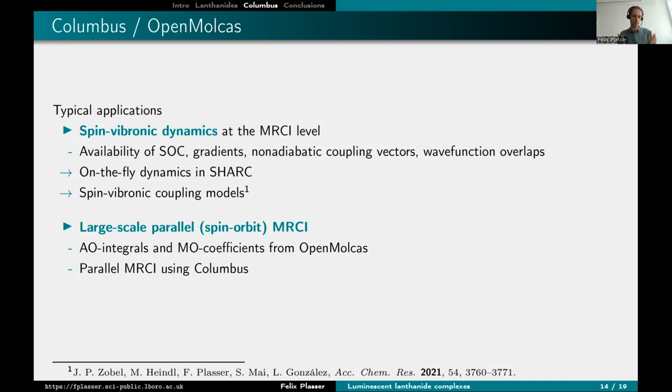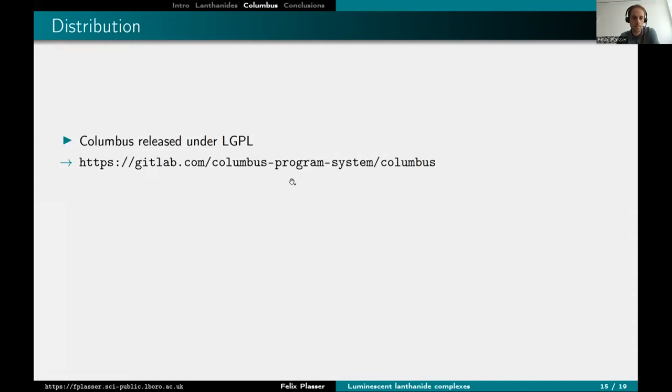The other typical application is large scale parallel spin orbit MRCI, for example, for these lanthanide complexes I just talked about. Then you can get the AO integrals and the MO coefficients from OpenMolcas, because that's quicker, and you can use Cholesky decomposition, all these tricks. And then you just feed the MO integrals into Columbus to run parallel MRCI. For that Columbus has this highly parallel uncontracted MRCI code where once you have the MOs you can run the job.